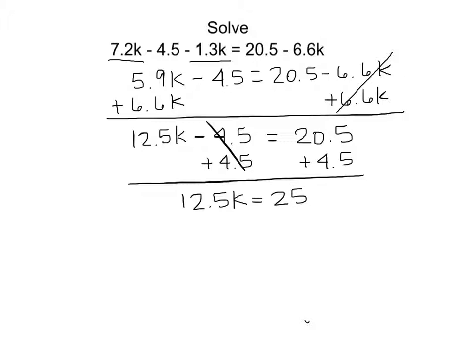Now I only have the k term on the left-hand side, but k is multiplied by 12.5. I'll undo that multiplication by dividing both sides by 12.5.